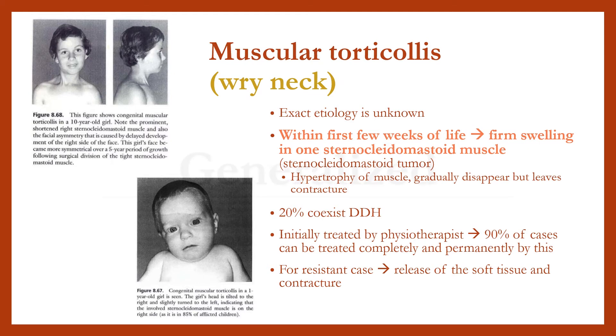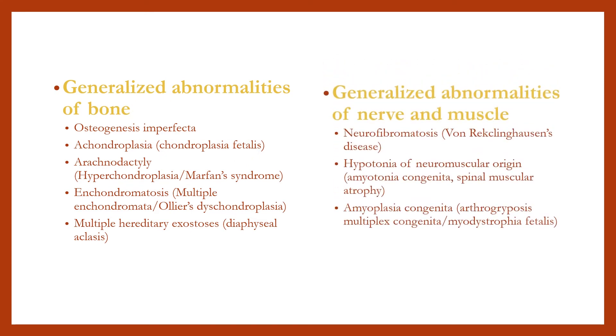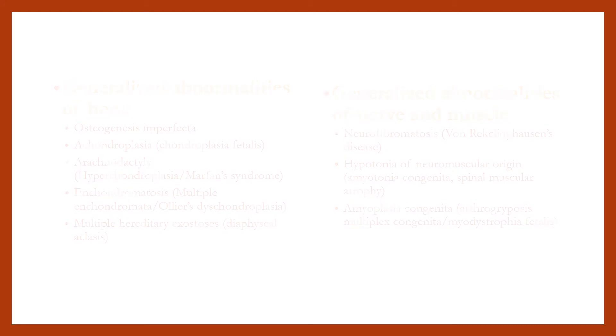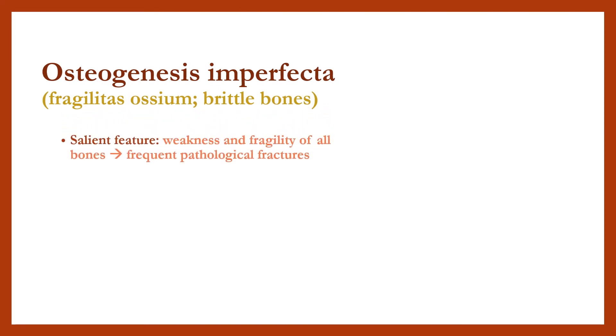Generalized congenital abnormalities include abnormalities of bone and of nerve and muscle. First is osteogenesis imperfecta, whose hallmark is weakness and fragility of all bones resulting in frequent pathological fractures, due to mutation of type 1 collagen genes.